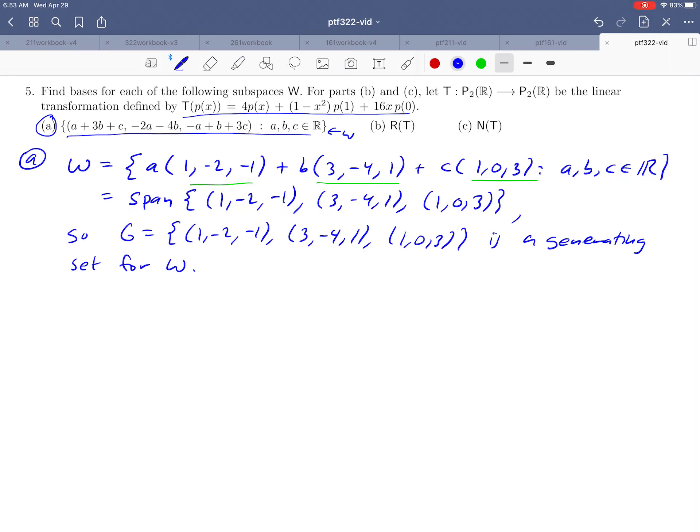We can do that by using our standard technique. You can form a matrix where the columns of the matrix are your vectors. We talked about how way back earlier in the course if you do row operations on this, the pivot columns will tell you the vectors that you need to keep in order to have a basis.